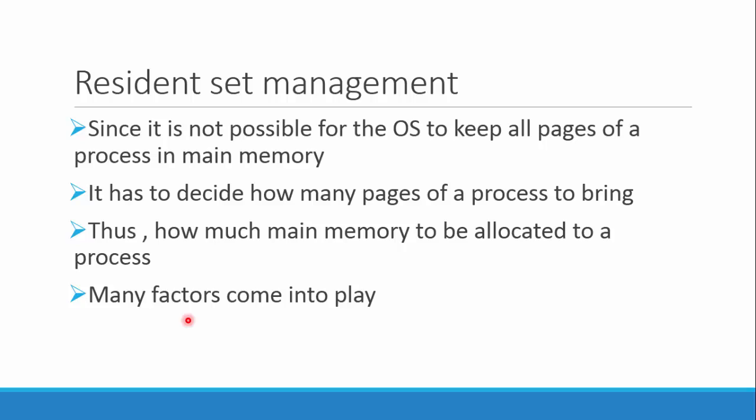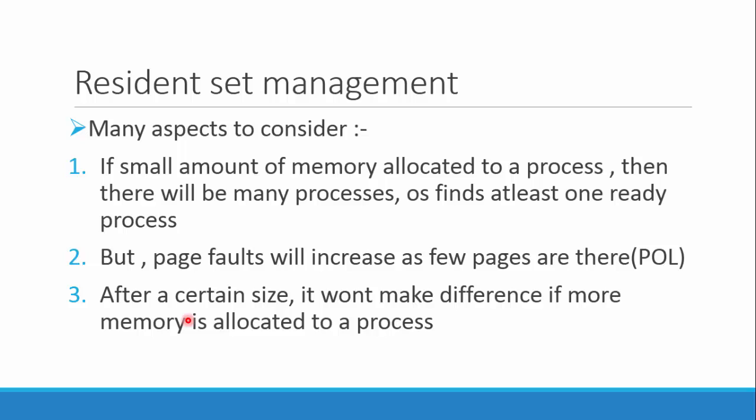The first topic is resident set management. The resident set refers to the set of pages of a process which are currently in the main memory. As we all know, it is impossible for the operating system to keep all the pages of a process in main memory, so it only brings the pages required at the moment. So the question is: how much main memory should be allocated to a single process?